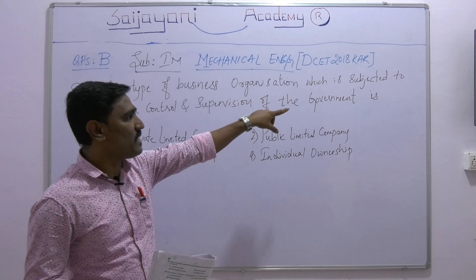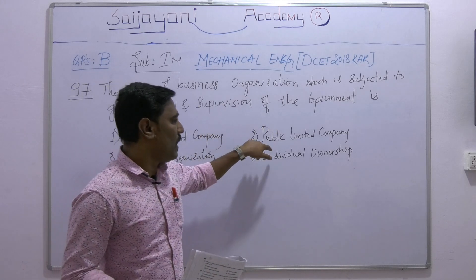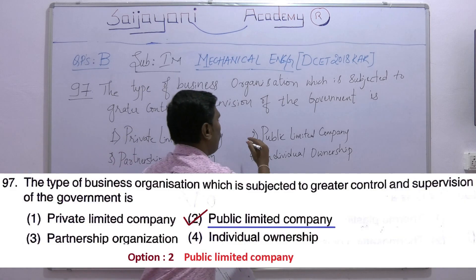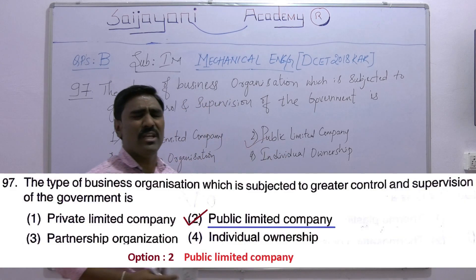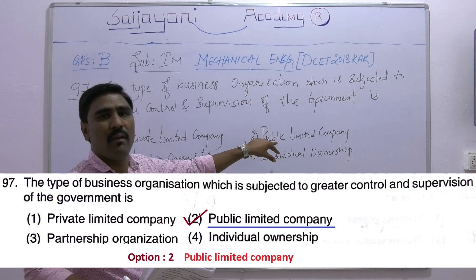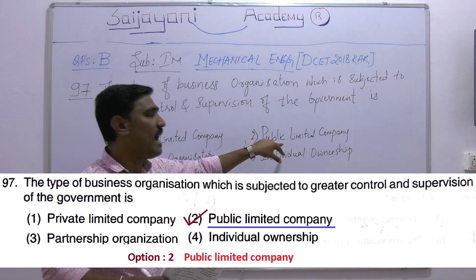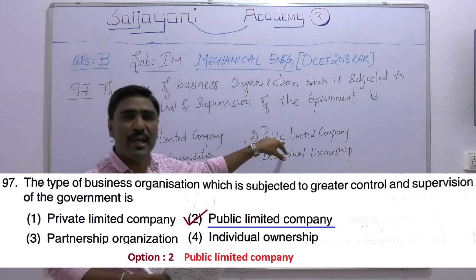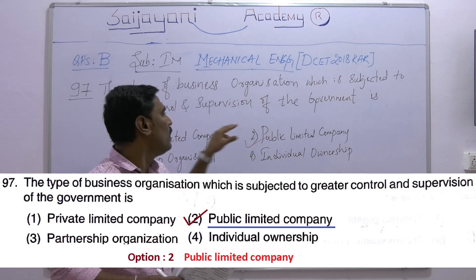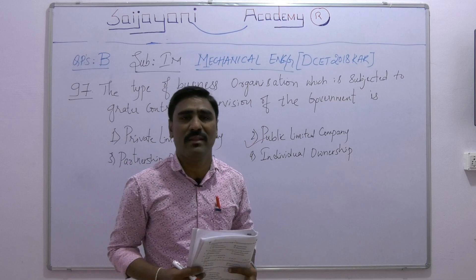From the above discussion, the organization which is subjected to greater control and supervision is option two: public limited company, because it involves public money and shareholders' money, hence it requires greater supervision.